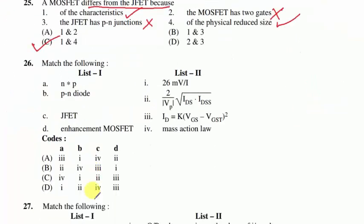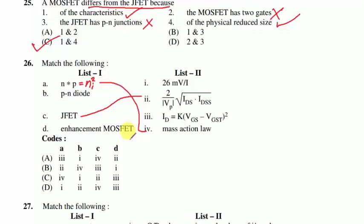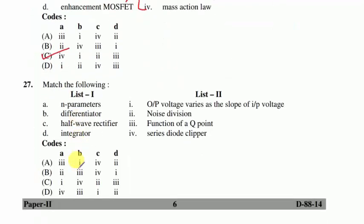Question 26: match the following. Mass action law: np = ni². For JFET, V_gs = (V_p / 2) × √(I_DS / I_DSS), where V_p is pinch-off voltage. For enhancement MOSFET in saturation: I_D = (μn·Cox·W/L)·(V_gs − V_th)² / 2. For a PN diode, the resistance is of the order of 26 milliohms. Suitable option C is correct.